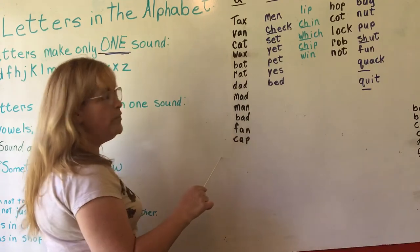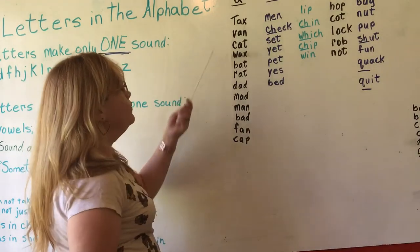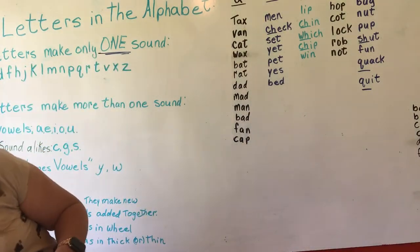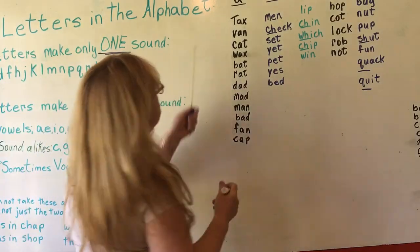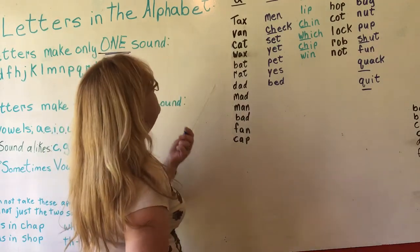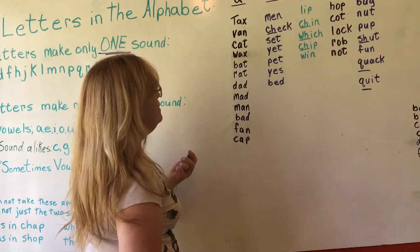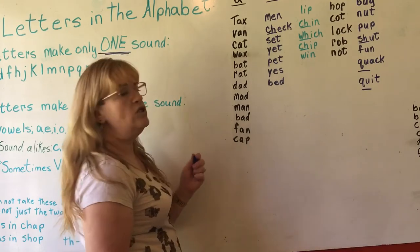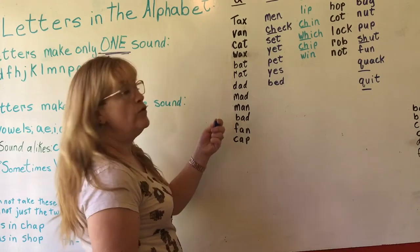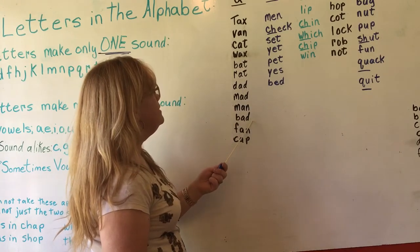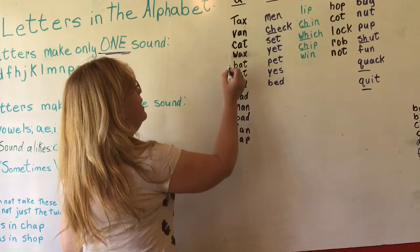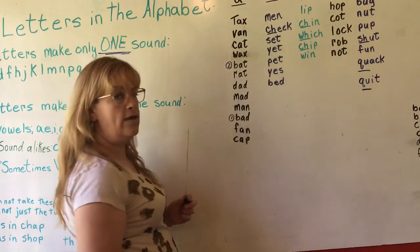Now if we were going to put these in alphabetical order, we'd put them in the order of the alphabet. None of these start with A, so what comes after A? B. We have two B words — bat and bad. They both begin with B, both have A, so we go to the third letter: T and D. D comes first, so bad would be first, then bat.